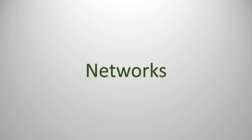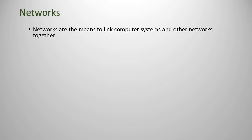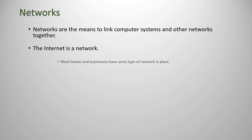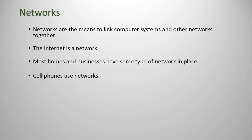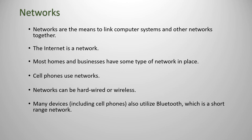For the second half of this lecture, we're going to look at some basics regarding networks. Networks, generally speaking, are the means to link computer systems or other networks together. The internet is considered to be a network. Most homes and businesses have some type of network in place, and cell phones use networks. Networks can be hardwired or wireless. Many devices, including cell phones, also use Bluetooth, which is a short-range network. Networks are comprised of five basic components.